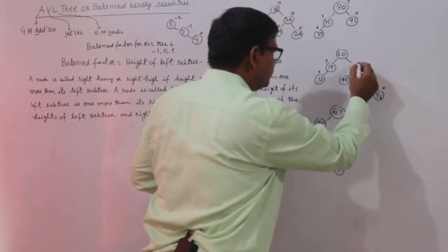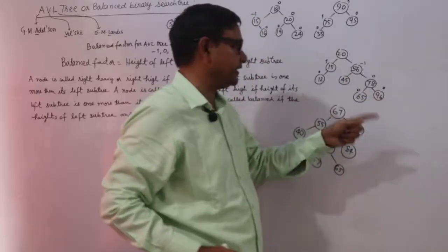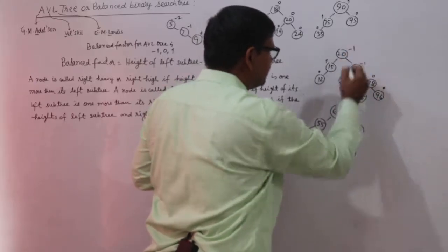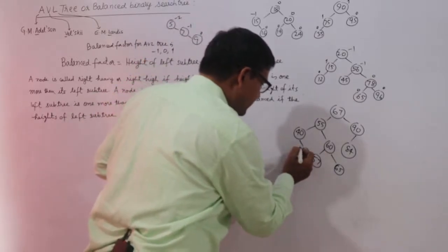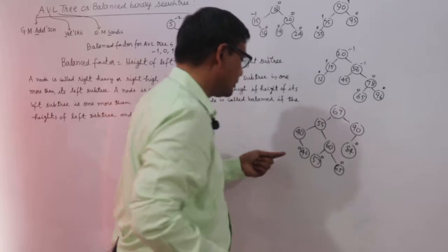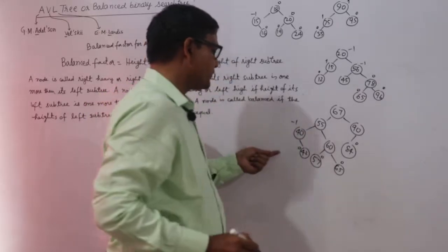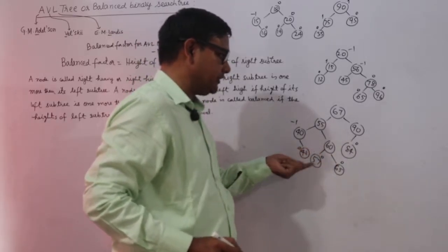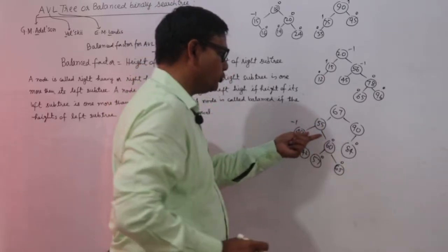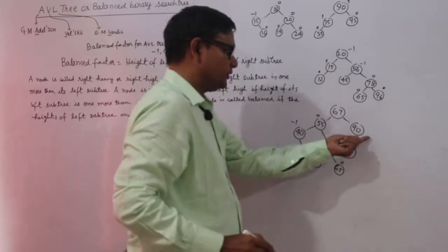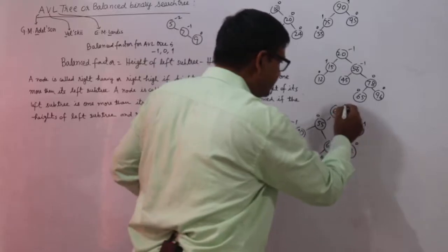For node 20, left subtree height is 2 and right subtree height is 3 — I will take the largest height — so 2 minus 3 equals minus 1. All base leaf nodes will have 0 balance factor. This node has balance factor minus 1 because left subtree height is 0, so 0 minus 1 equals minus 1. Left subtree height 1 minus right subtree height 1 equals 0. For another node, 2 minus 2 equals 0. This node has 1 minus 0 equals 1. The final node has left subtree height 3 and right subtree height 2, so 3 minus 2 equals 1. In this way, we find the balance factor of the nodes.